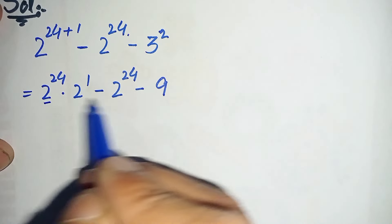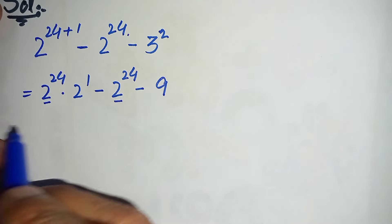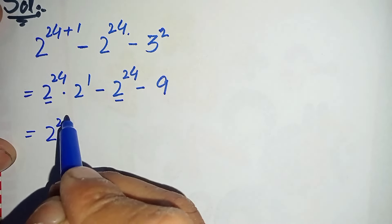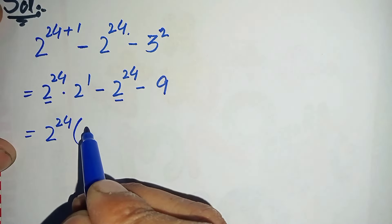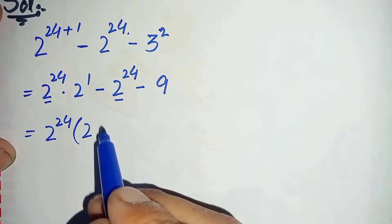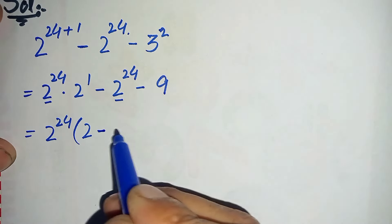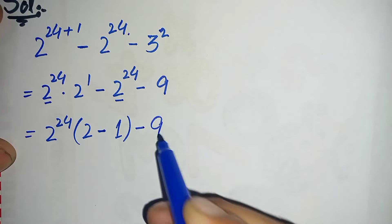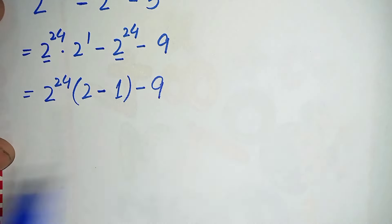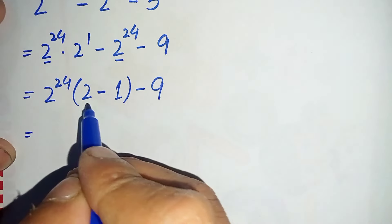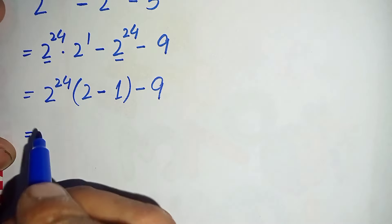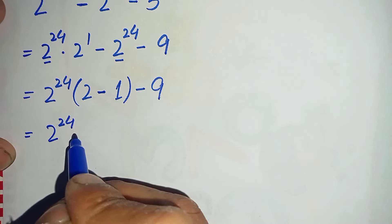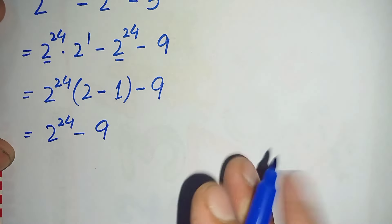Next, we will take 2 raised to power 24 as a common factor from the first two terms. After taking 2 raised to power 24 common, only 2 raised to power 1, which is 2, minus 1 is left. So 2 minus 1 is 1, and it will become 2 raised to power 24 times 1, minus 9.